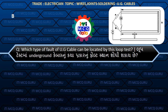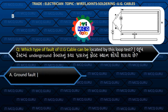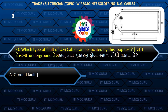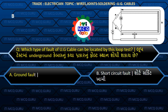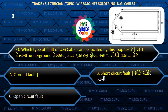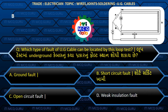Which type of fault of a UG cable can be located by a loop test? (Loop test maa underground cable noo kya prakar noo fault sthan shodi sakai chhe?) Answer B: Short circuit fault.